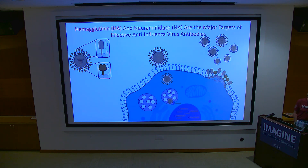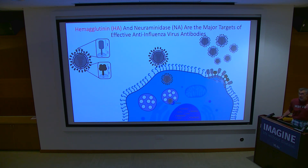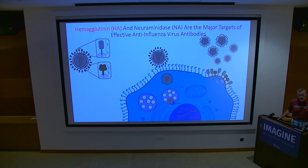Yvonne is interested in antibodies against viral surface proteins — hemagglutinin and neuraminidase. A flu virion has about 500 HA spikes. We depict it as a sphere, but flu in humans is actually filamentous. The virus evolves immediately to make a sphere in vitro because it grows faster, but put it back in a person and it's filamentous again.